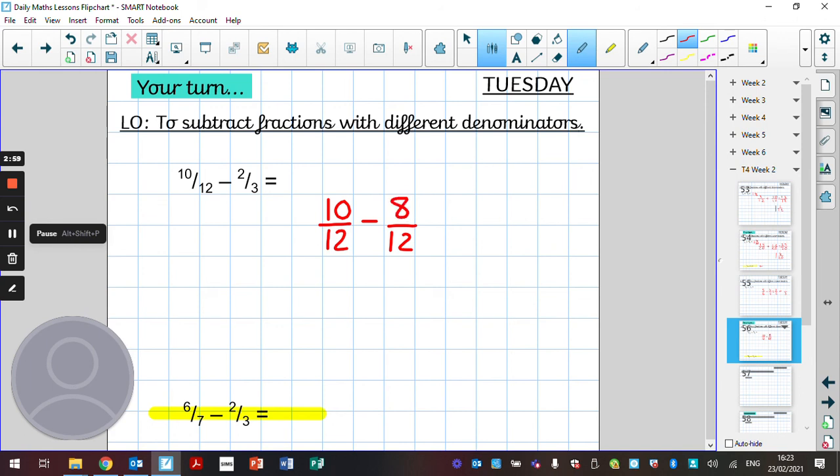Well done if you've got that step there already. Now we can subtract them because we've got the same denominator. Ten minus eight is two, the denominator twelve stays the same. Could we simplify that? Yes we could, because we know that two is a multiple of twelve, so that then would become one sixth.